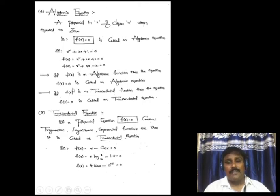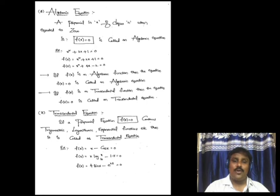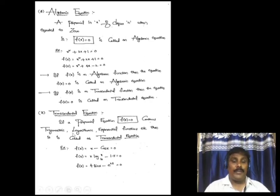If f(x) is a transcendental function, then it is called a transcendental equation. A transcendental equation means if the polynomial contains any trigonometric functions, logarithmic functions, exponential functions, or any other such functions, then it is called a transcendental equation.